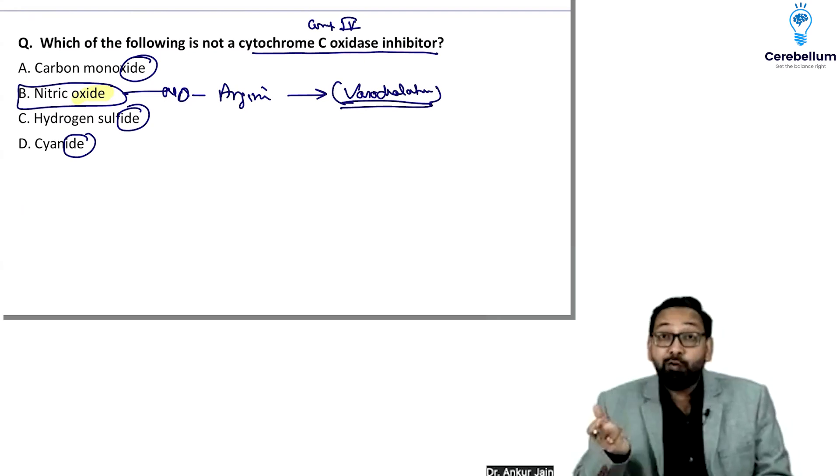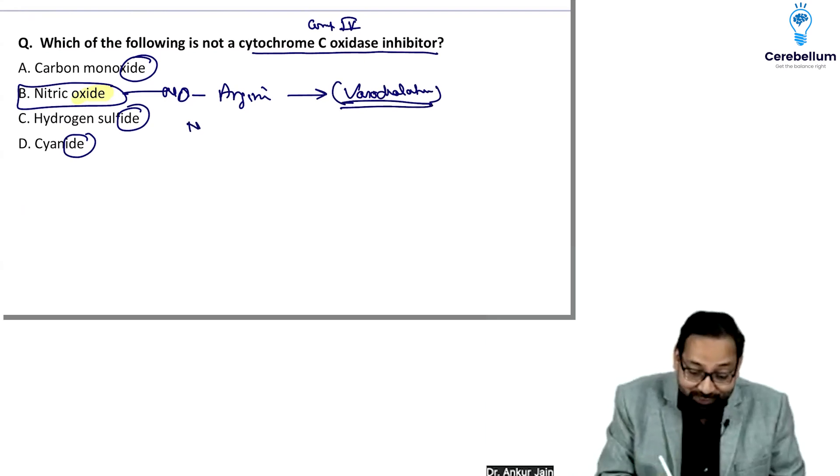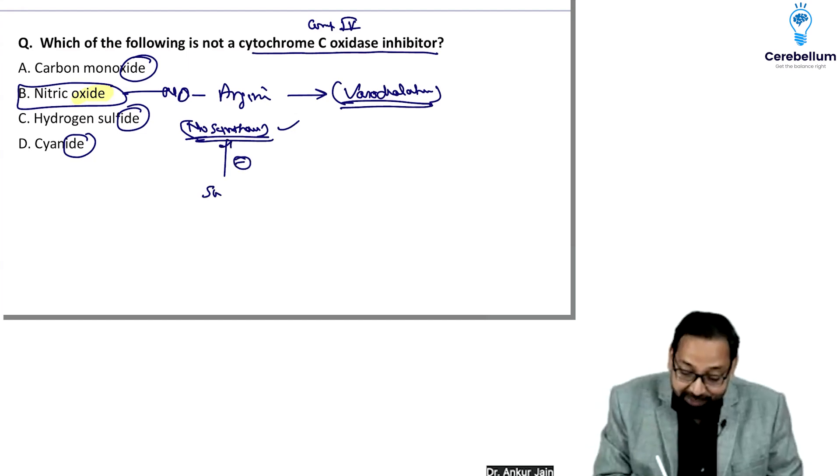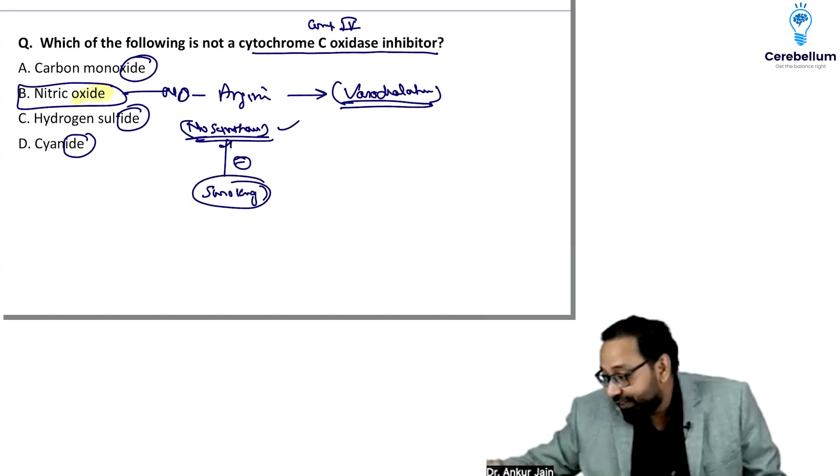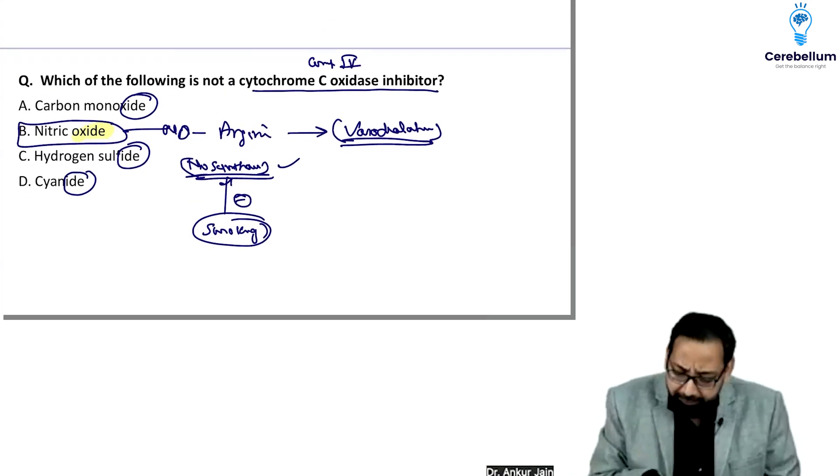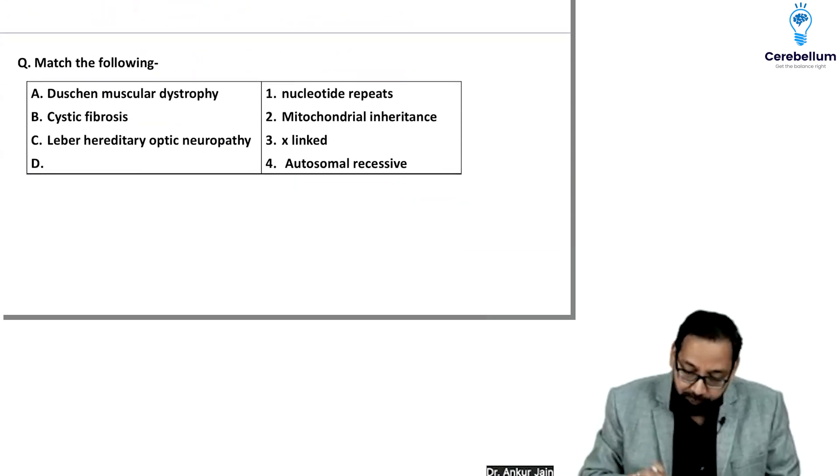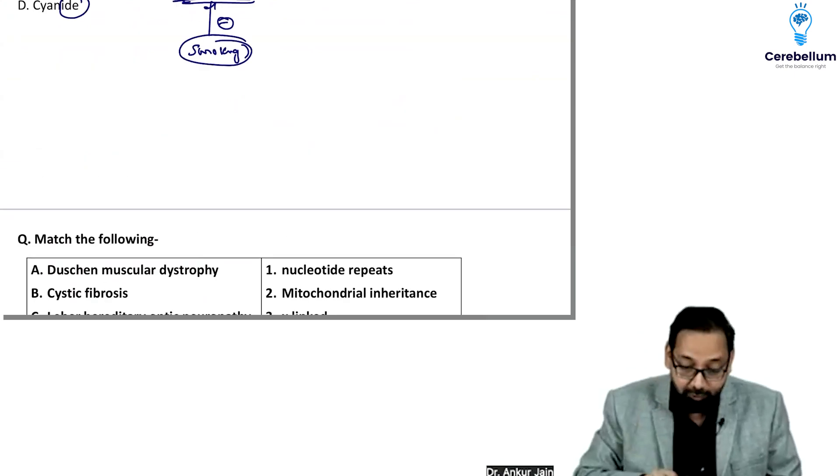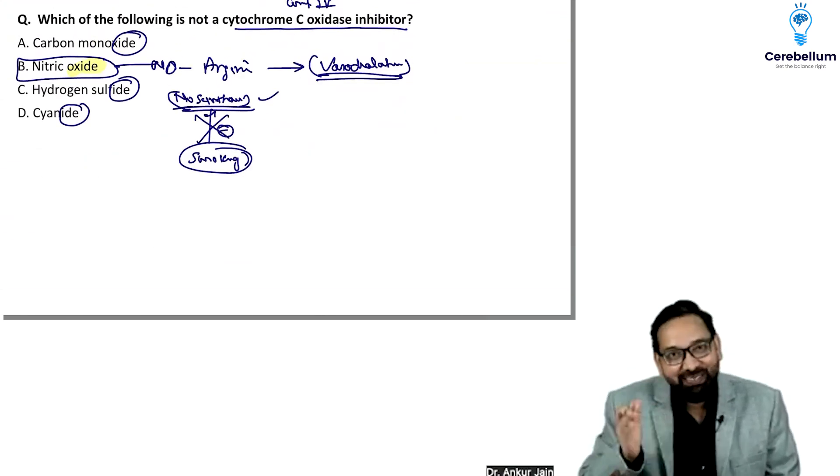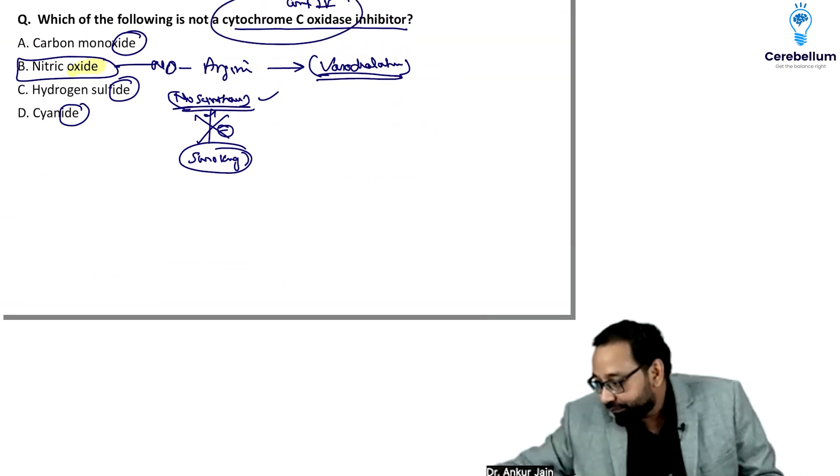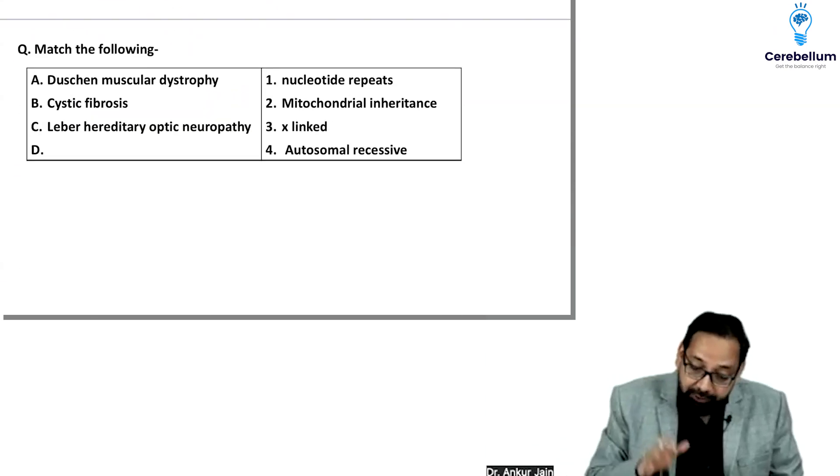NO synthase is inhibited by smoking, and it can lead to erectile dysfunction. So many actors appear to be macho men with cigarettes in hand, but they are not macho men because NO synthase is inhibited and erectile dysfunction can occur. So NO is not inhibiting complex four.